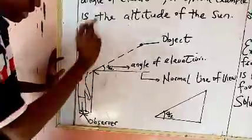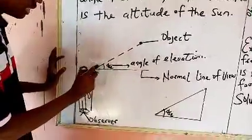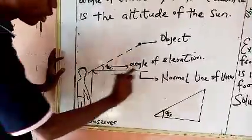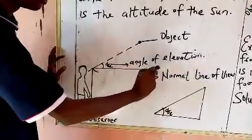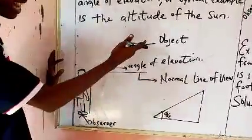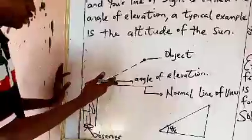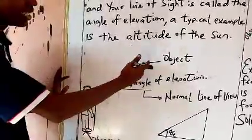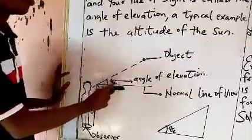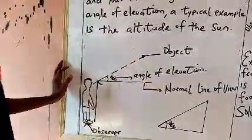Bear in mind: the angle between the normal horizontal view and the line of sight at which you look at that object is called the angle of elevation.